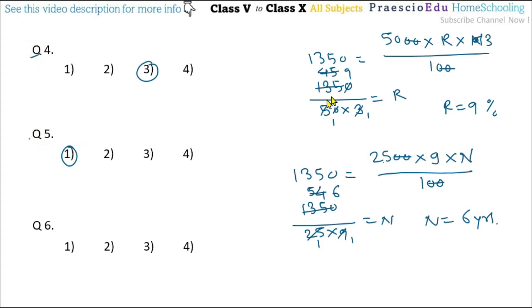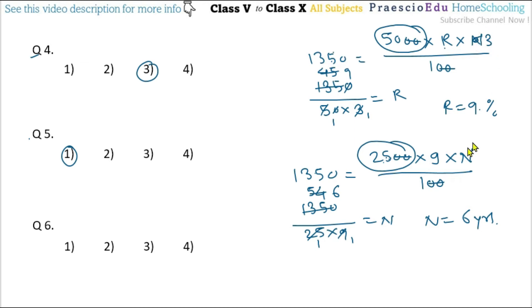If you observe question number 4 and question number 5, the only difference is the principal amount. The rate is 9% and the interest is the same. When the principal amount is halved, for the same interest the number of years doubles. This is just an observation for your information.